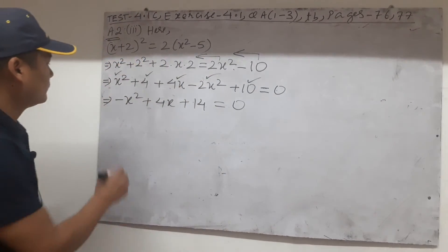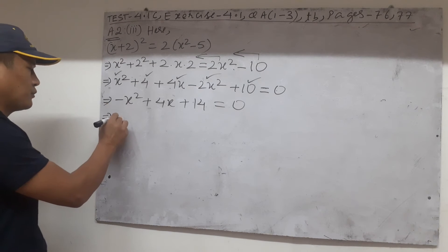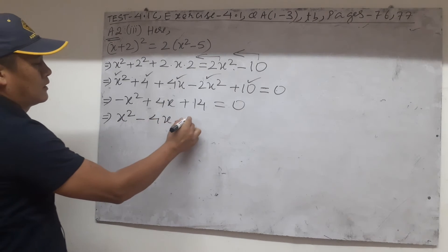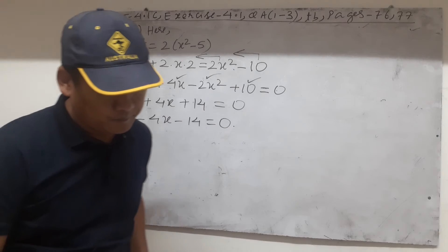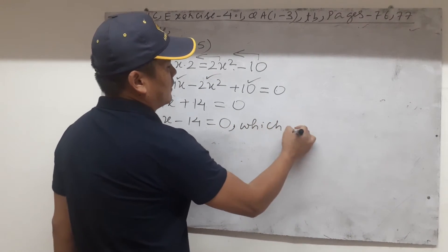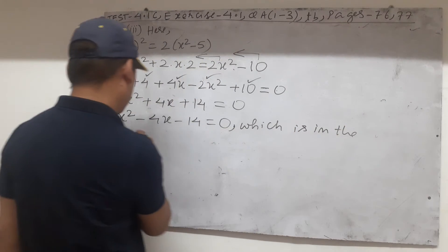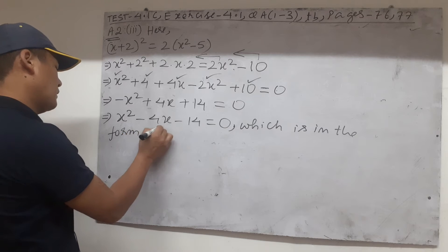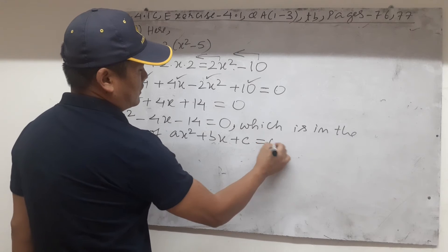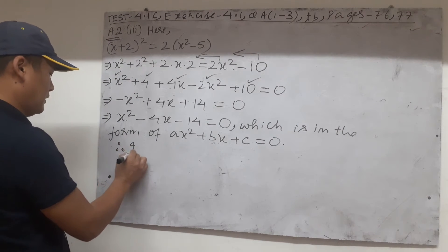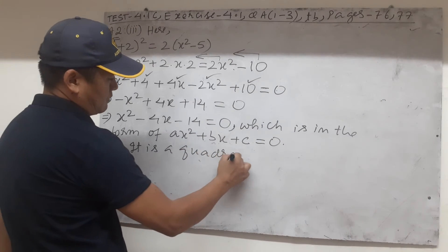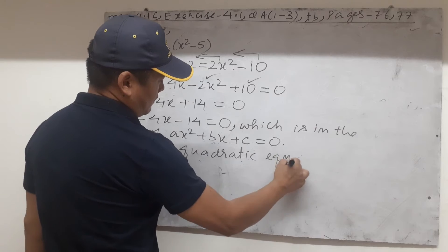Combining like terms: x squared minus 2x squared gives minus x squared, then plus 4x alone, and plus 4 plus 10 is plus 14 equals zero. Making the leading term positive: x squared minus 4x minus 14 equals zero, which matches the textbook answer. This is in the form of ax squared plus bx plus c equal to zero, so option 3 is also a quadratic equation.